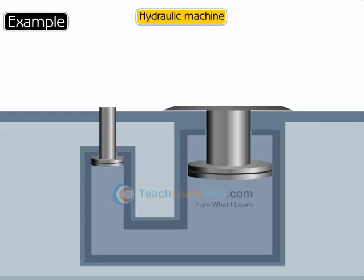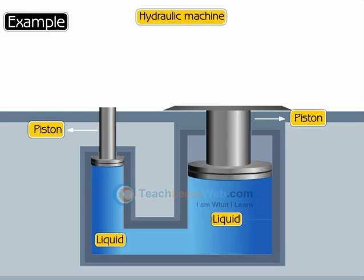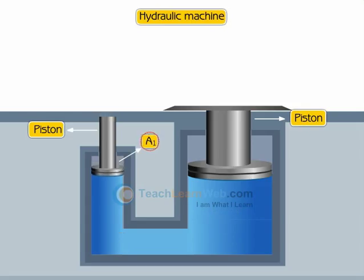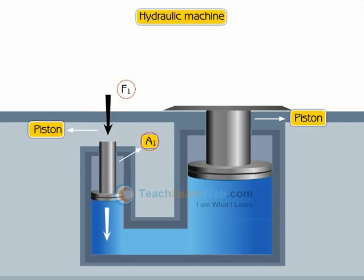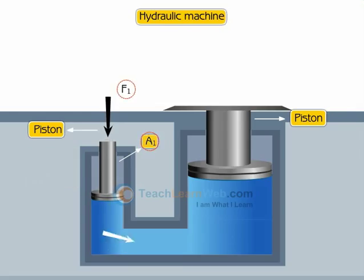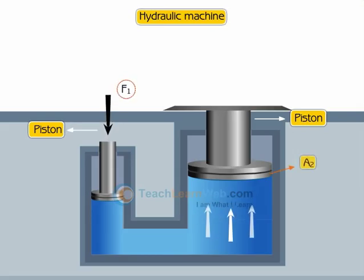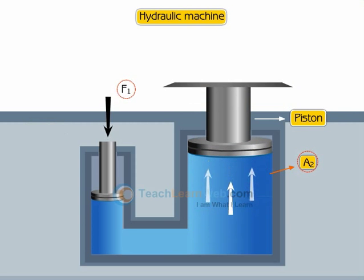In a hydraulic lift, two pistons are separated by the space filled with a liquid. A piston of small cross section A1 is used to exert a force F1 directly on the liquid. The pressure P, equal to F1 divided by A1, is transmitted throughout the liquid to the larger cylinder attached with a larger piston of area A2, which results in an upward force of P multiplied by A2.